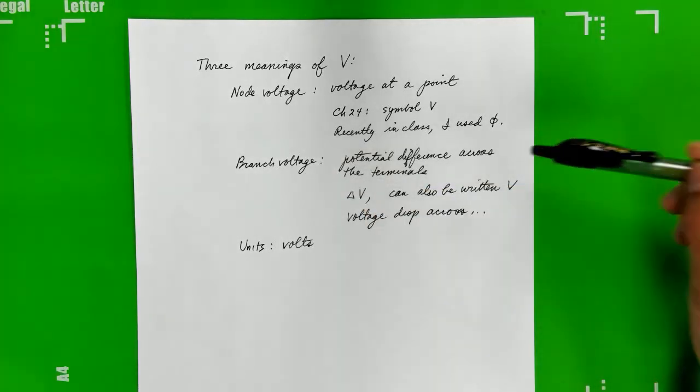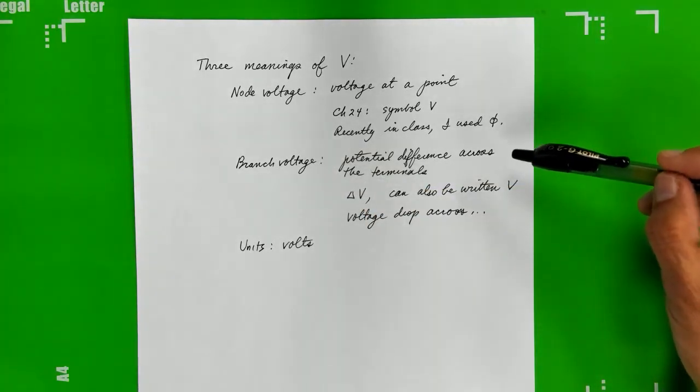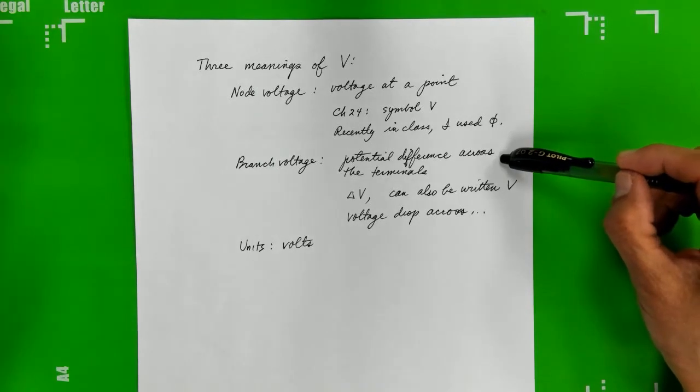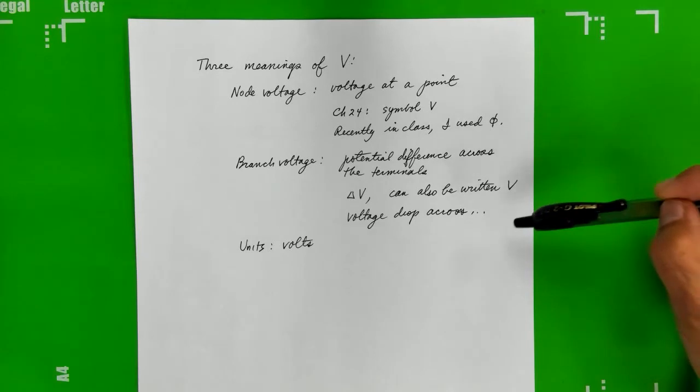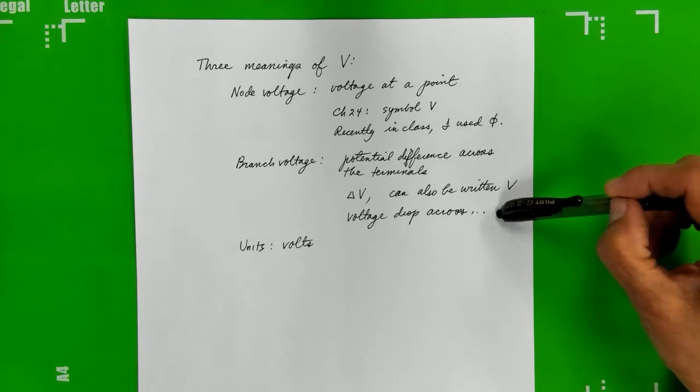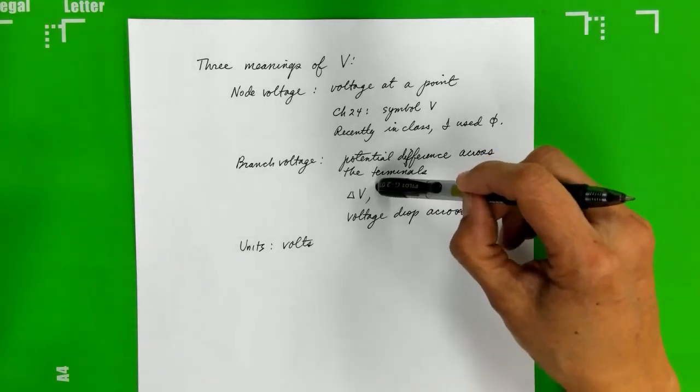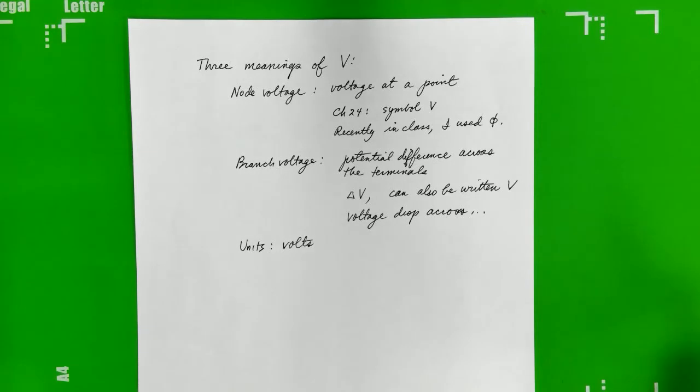And then in physics textbooks, the branch voltage is the potential difference across the terminals of a circuit element. We can also say that it is the voltage drop across a circuit element. And basically what you're looking at is delta V, which is the difference in potential between the two sides of the circuit element.